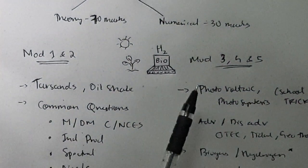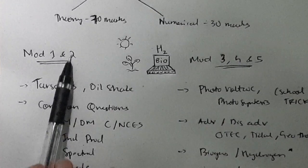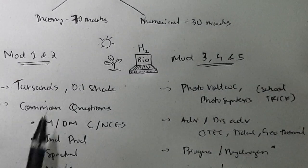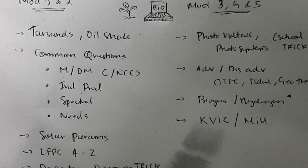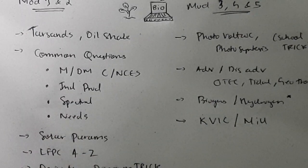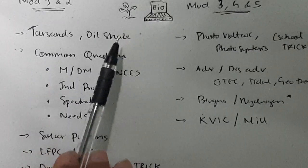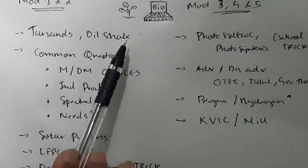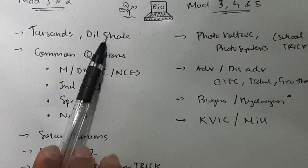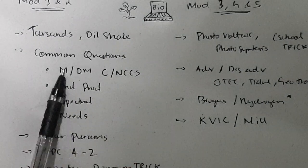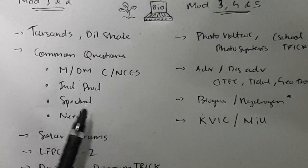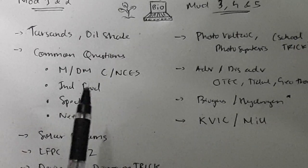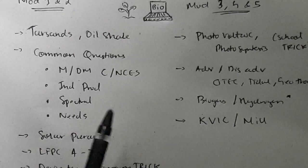It's divided mainly into two parts: module 1 and 2, and module 3, 4 and 5. In module 1 and 2, tar sands and oil shale - these are the two topics which can easily be found in module 1. Make sure you study what is tar sands and what is oil shale, how it is relevant to take energy from it. These are the very important concepts because it's repeated more than six or seven times. Make sure you know the diagram and these things very well. The common questions are asked like what is the merits and demerits of conventional non-conventional energy sources, what is India's position in the production and the reserves of non-conventional energy and conventional energy.